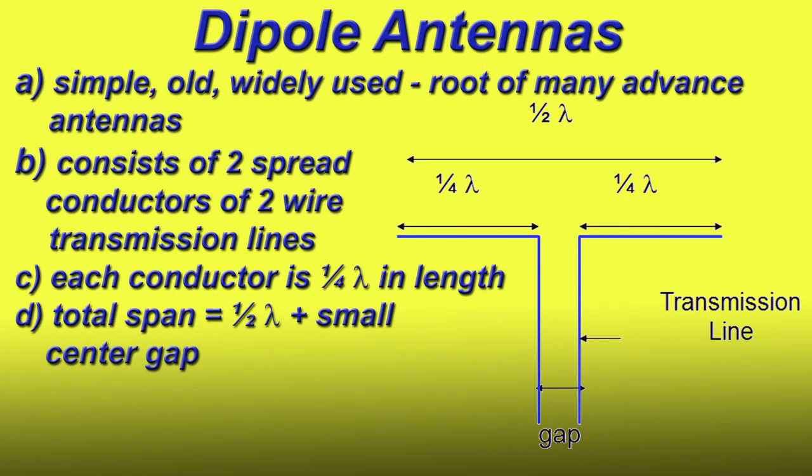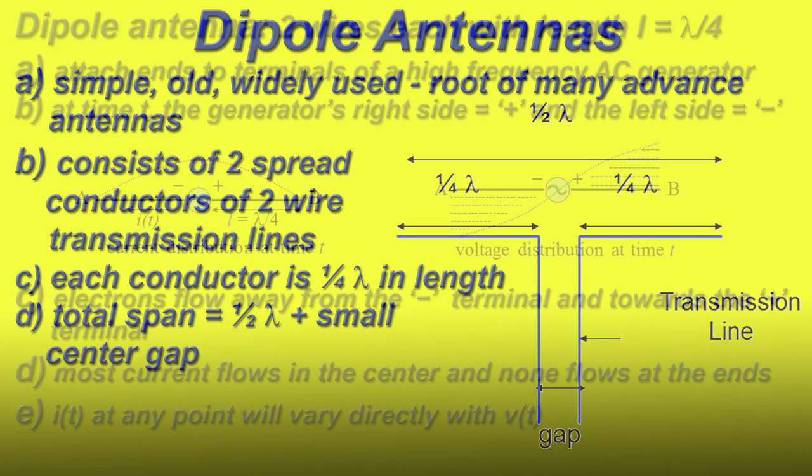So let's start out with the basics, a dipole antenna. The dipole is one of the simplest antennas. It's very widely used and the root of many advanced antennas, consisting of two spread conductors of a two-wire transmission line. Each conductor is a quarter wave in length, with a total span of a half wave plus a small gap in the middle.